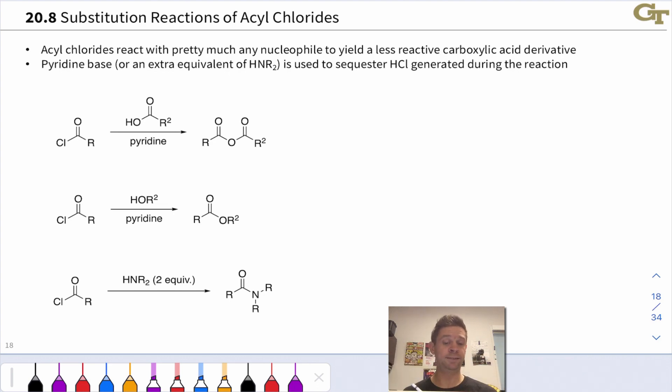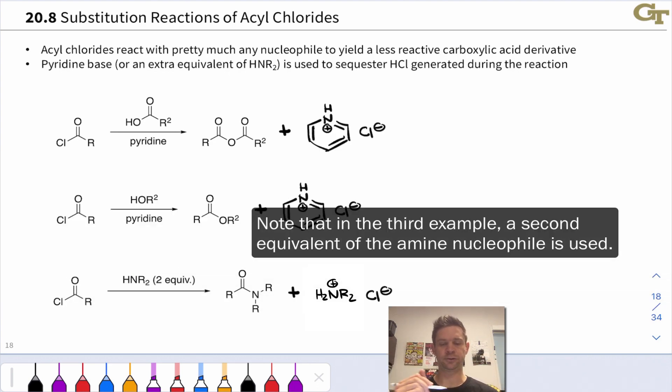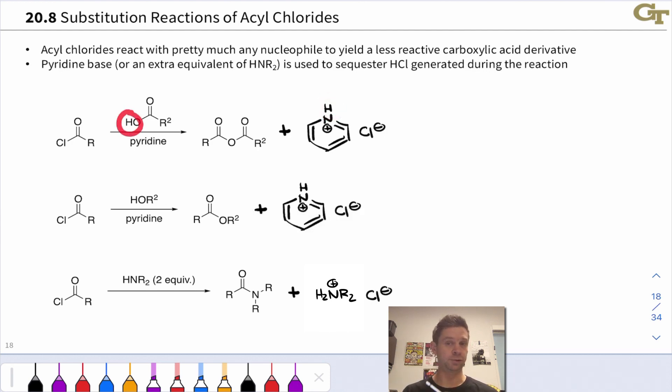In all three of these examples pyridine base is used to sequester HCl and the H in the pyridinium ion comes from the nucleophile which is neutral in all three cases and the Cl- comes from the acyl chloride, it's a leaving group.